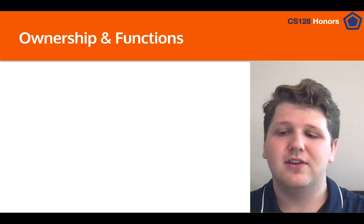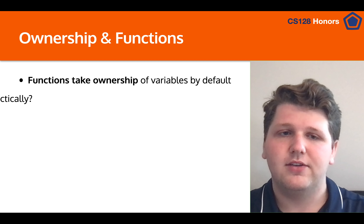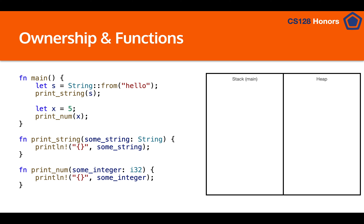So let's talk about ownership and functions. In Rust, functions take ownership of variables by default. Looking at this code, on the right hand side we have a simplified version of memory. When we run the first line we're going to allocate some space on the stack and the heap — specifically we create variable s with a length, a capacity, and a pointer to some variable size memory (a string) in the heap. The heap is essentially memory that can be expanded and shrunk at any time. In this case we're putting 'hello' in there and we have the s variable on our stack.